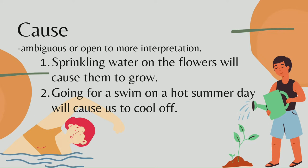Going for a swim on a hot summer day will cause us to cool off. Swimming is sufficient to cool our body, but there are many other ways to cool down — like pouring cold water on yourself or going into an air-conditioned room. As we can see from these examples, causes are ambiguous and open to more interpretations.